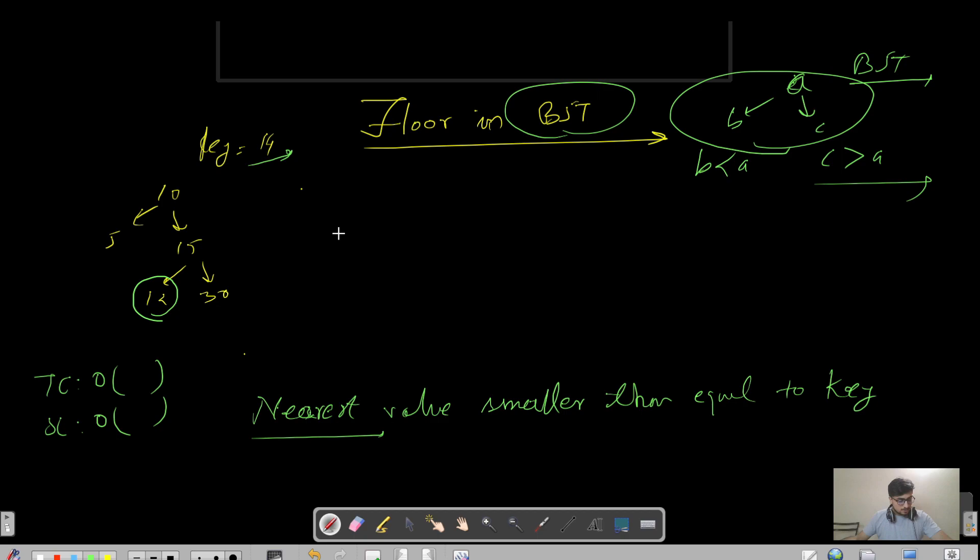Let's say if I am at this level, my current node is 10 and my key given is 14, which is greater. So that means we need to make a move either to left or to right and we have to keep track of our answer.